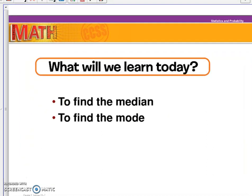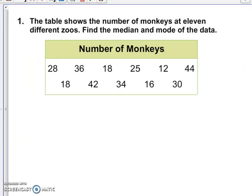So let's take a look at a first example. This table shows the number of monkeys at eleven different zoos. Let's find the median and mode of the data. So what I want to do is organize them from least to greatest.